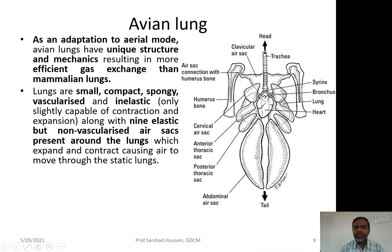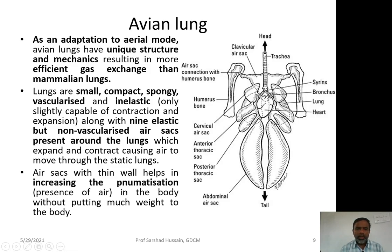The air sacs expand, causing air to come inside from the trachea into the lungs, then into the air sacs. When they contract, they expel air through the lungs. In this way, air is continuously passing through the lungs to the air sacs and back. These air sacs are sometimes continuous with pneumatic cavities inside the bones of birds, increasing pneumatization and thereby reducing body weight.